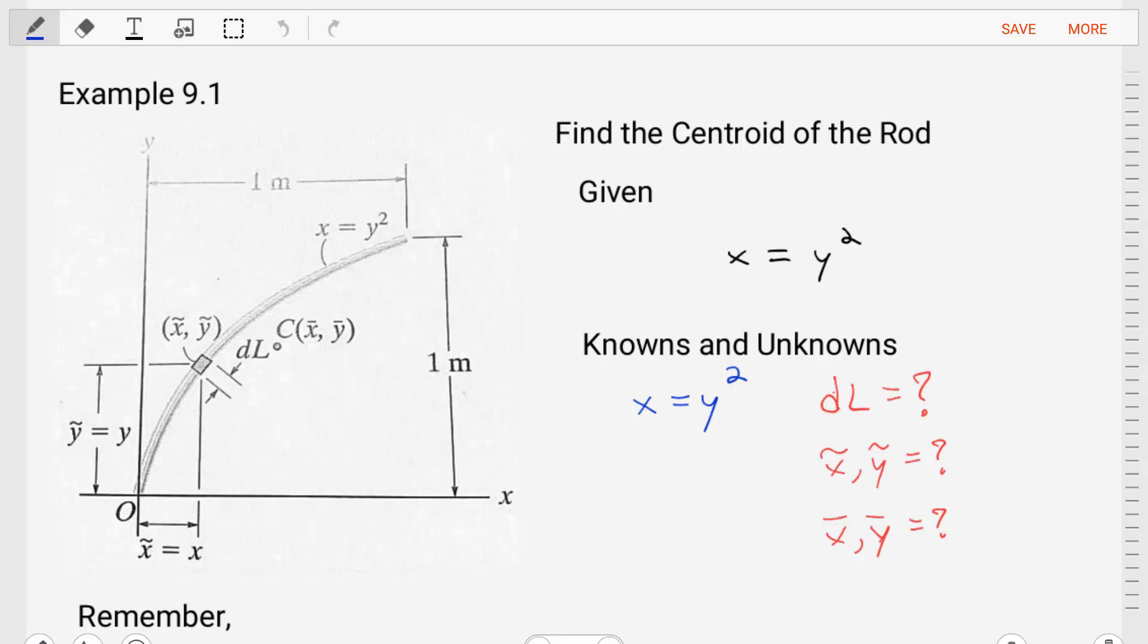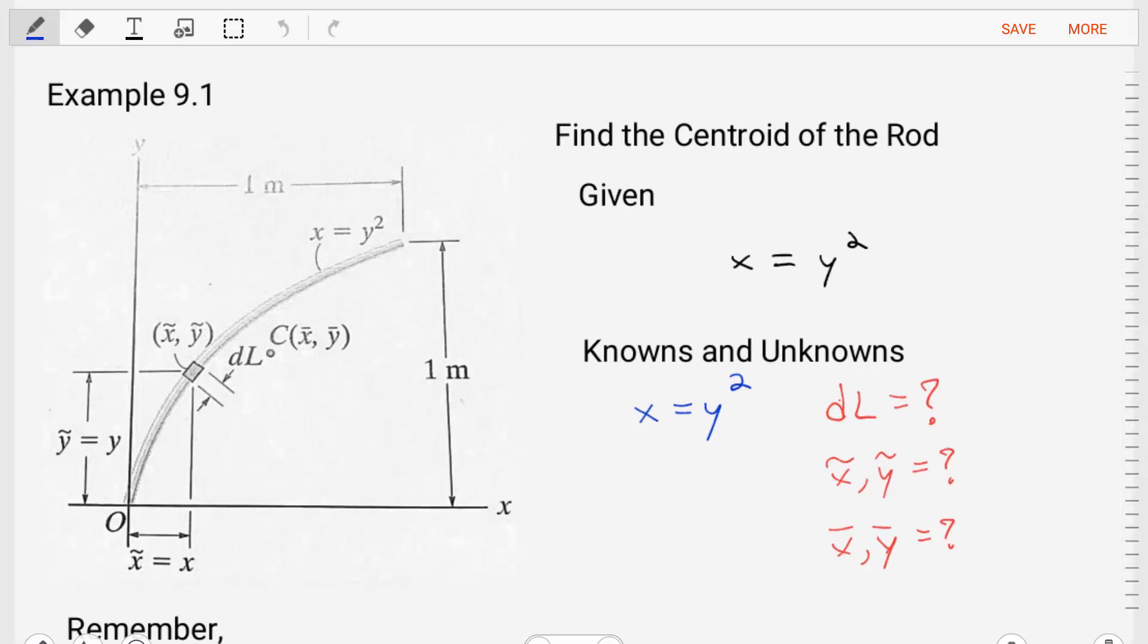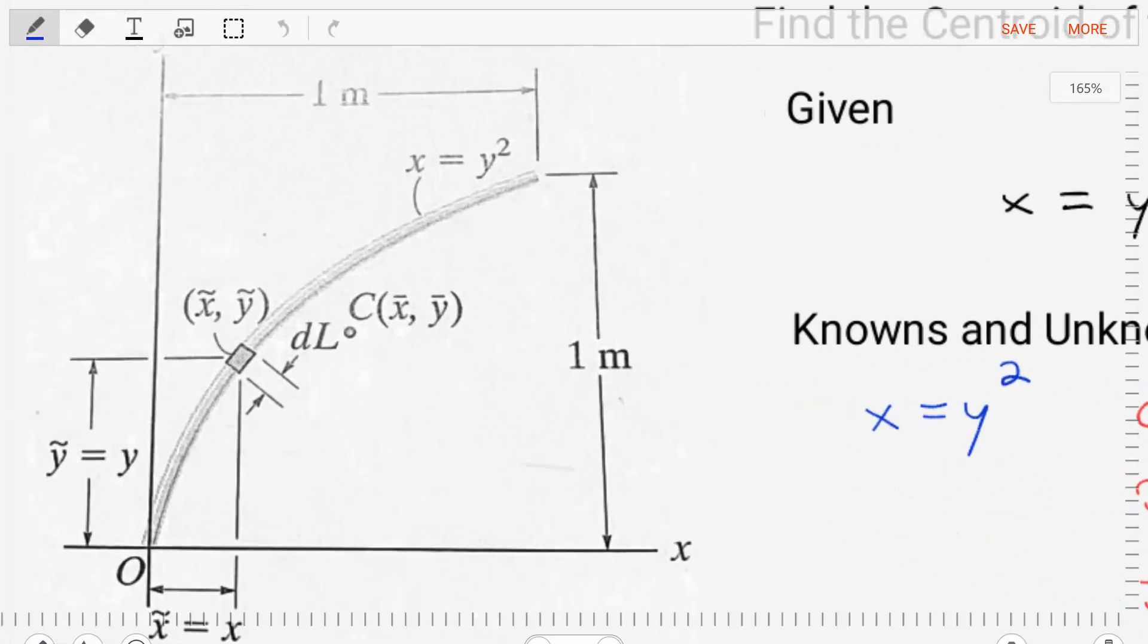Hello students, welcome to statics. I'm Dr. Stewart and today we're going to do an example for finding the centroid of a line. This example is example 9.1 coming from Hibbler's statics book. The problem tells us to find the centroid of the rod that's given. Let's look at the rod that's given.